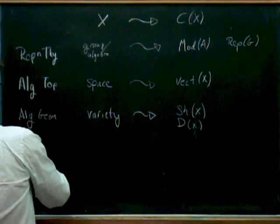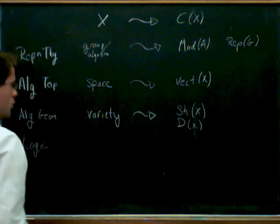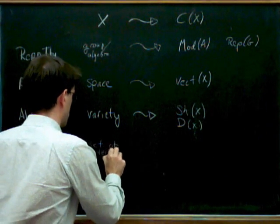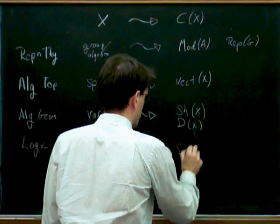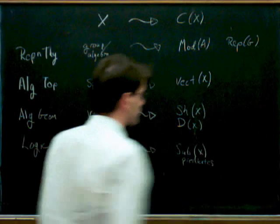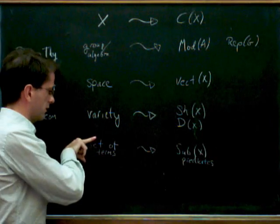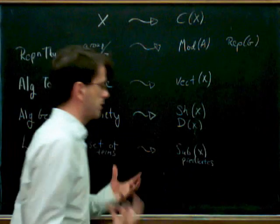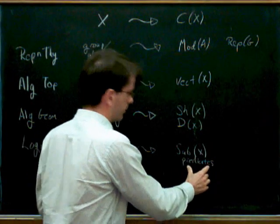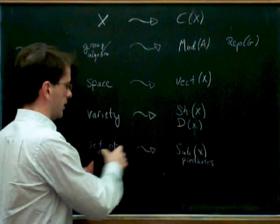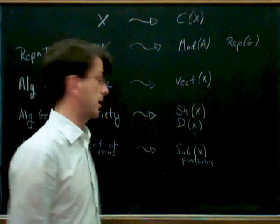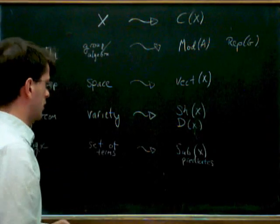If you're doing logic, you might possibly be interested in a set of terms, and you associate to that the subsets of X — so the subsets of X, which are sort of the predicates. So maybe X is the set of people on the planet and you're looking at predicates — things which are true or false about people, like whether they've read something. The people for whom the predicate is true form a subset, so you can think of predicates as just being equivalent to a subset.